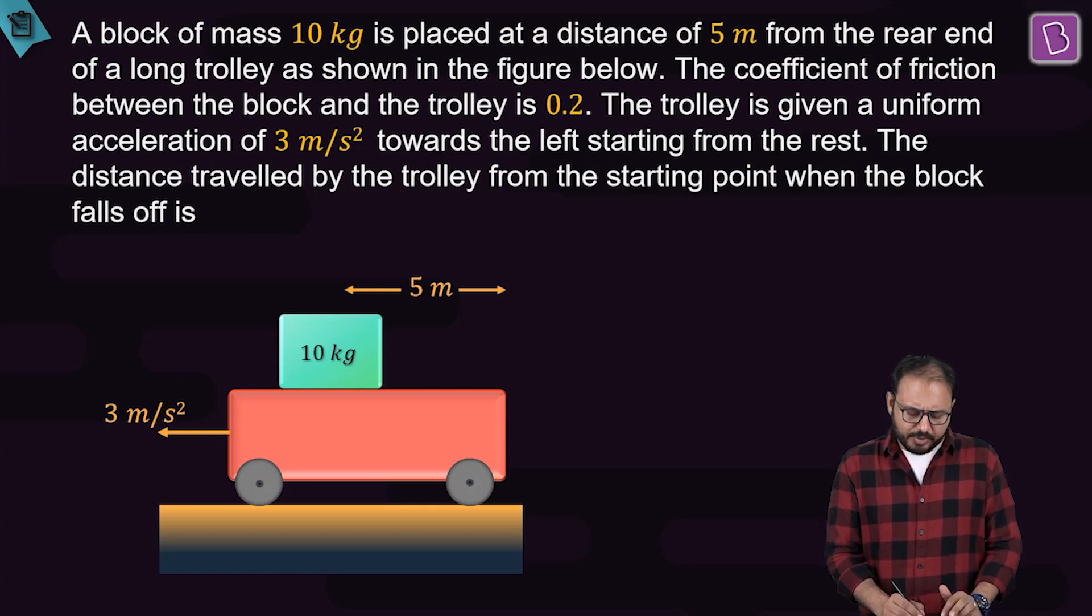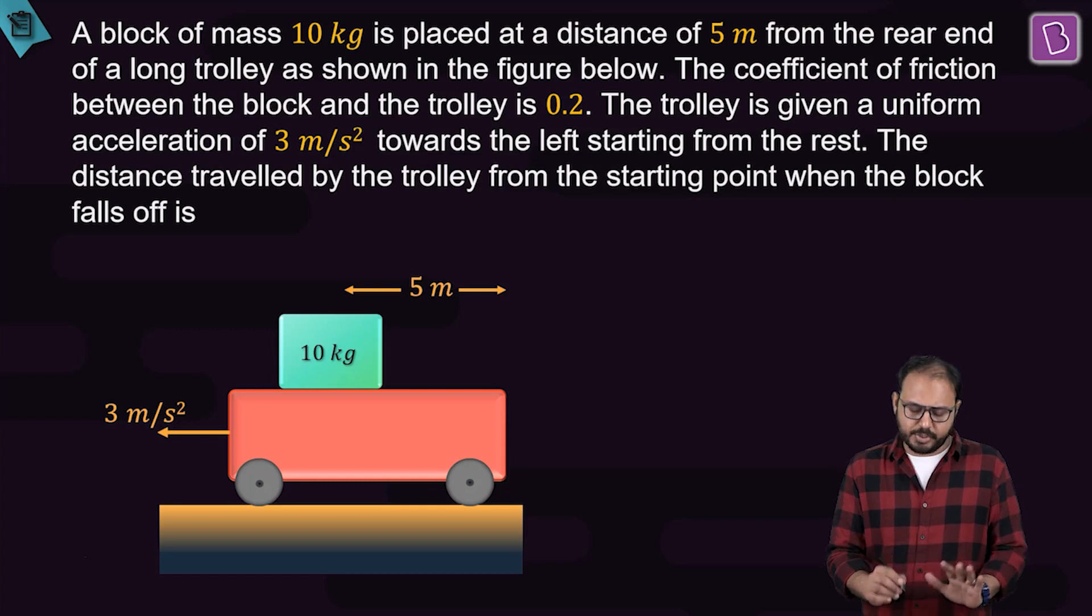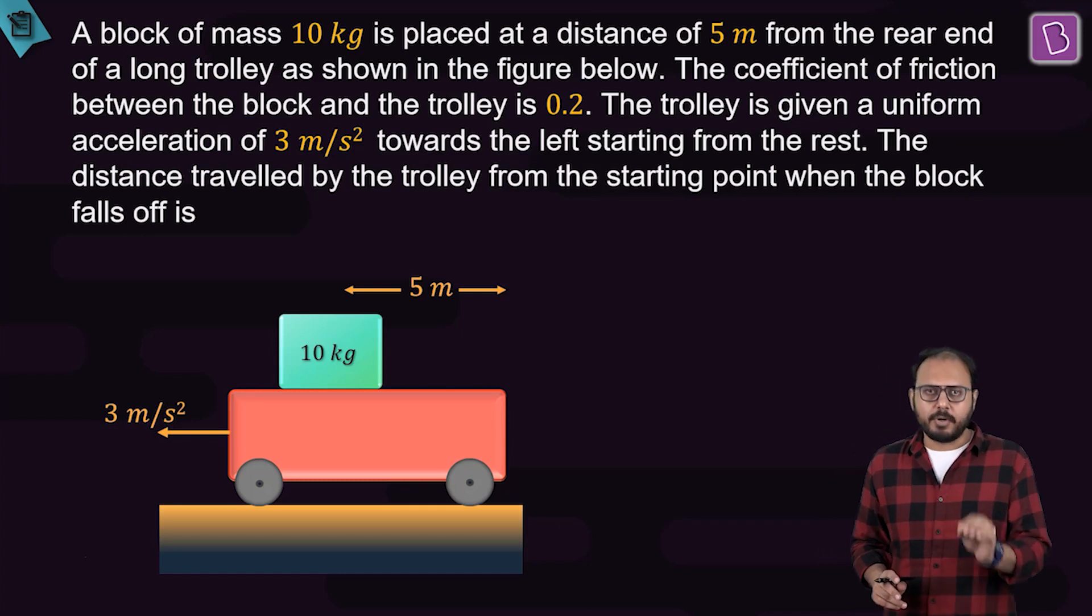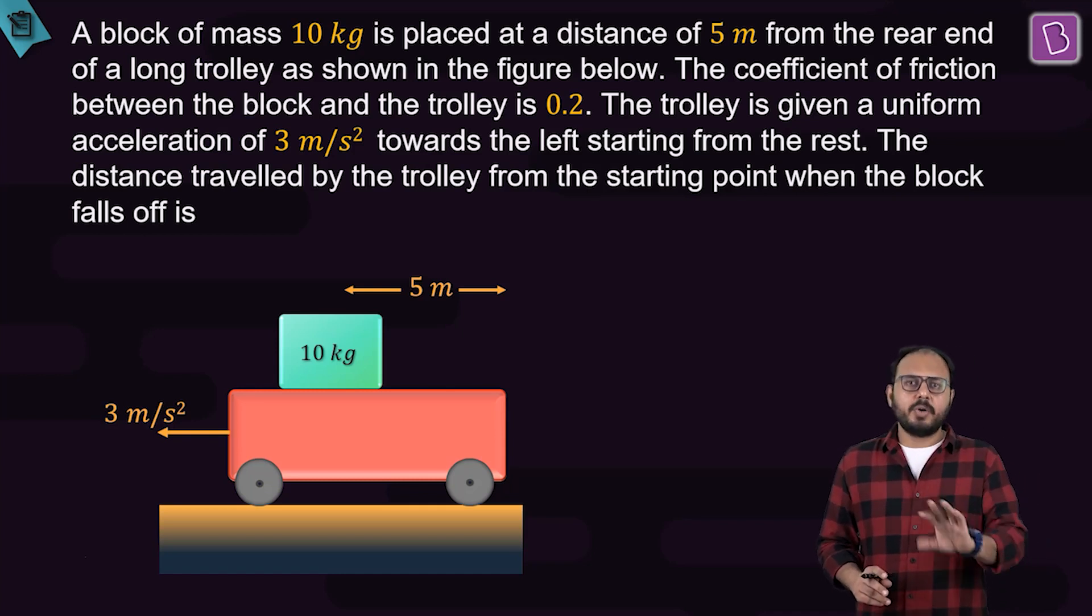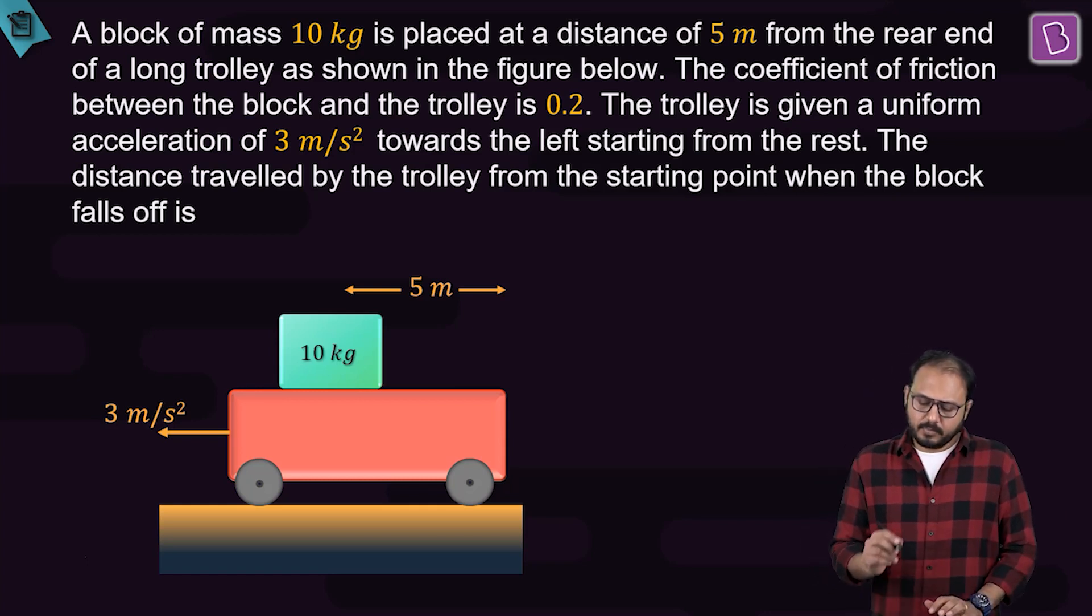You have a trolley which is being maintained at an acceleration of 3 meter per second square towards left as shown. Some external agent must be doing that. What's given is that this 3 meter per second square acceleration of the trolley is constant towards the left-hand side in ground frame. It also starts from rest.